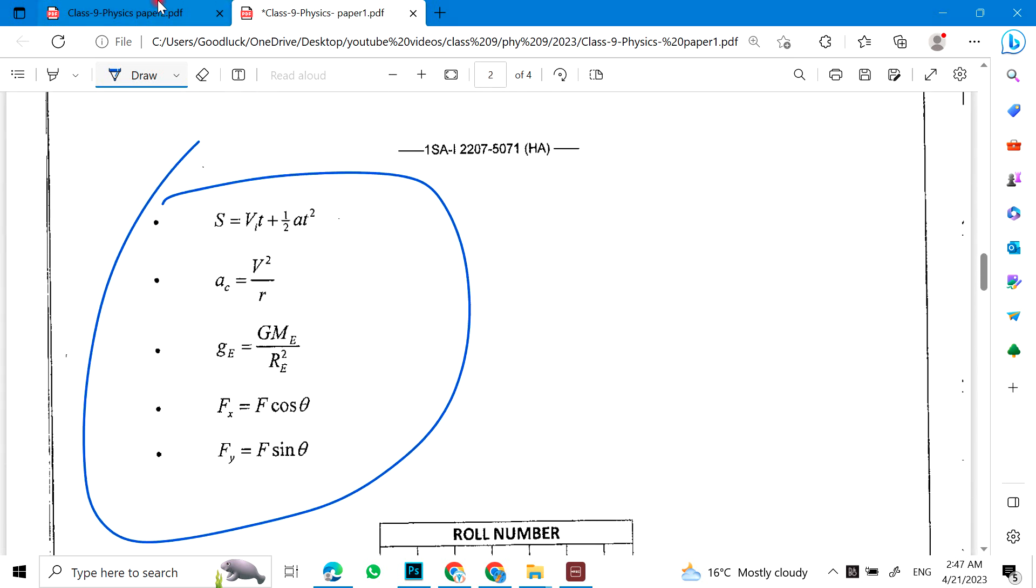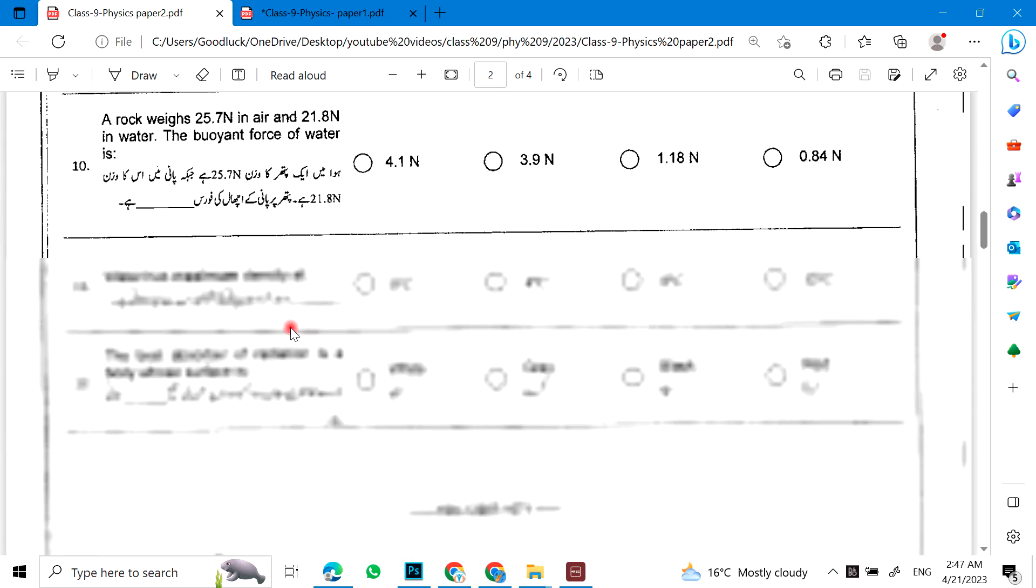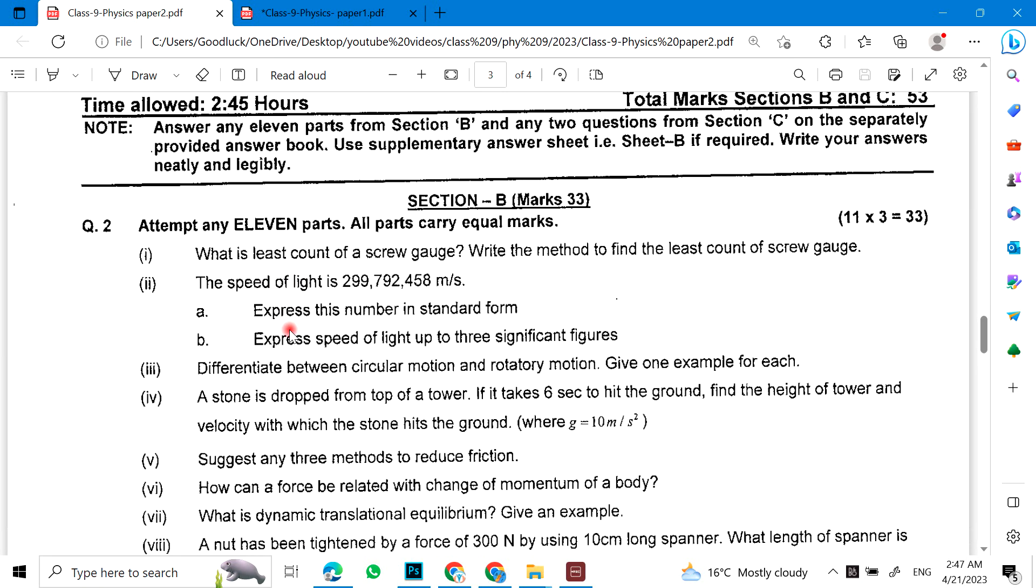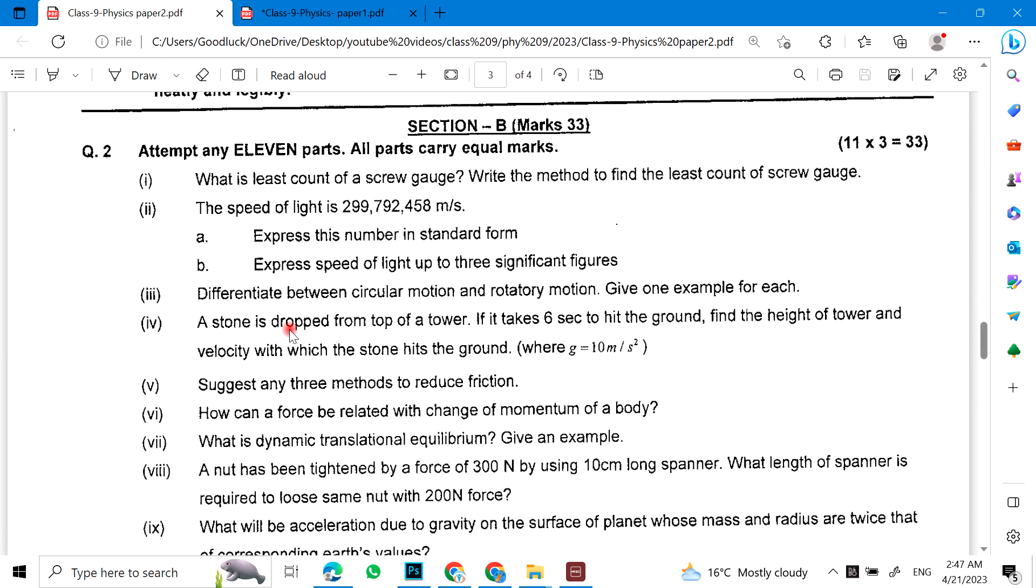MCQs will also come. We'll come back to MCQs. First of all, I will tell you the subjectives. What is the least count of screw gauge? Write the method to find the least count of a screw gauge. And light. Speed of light is this. You have to express it in standard form and scientific notation. Differentiate between circular motion and rotatory motion. Give an example of each.